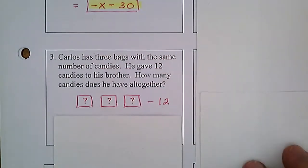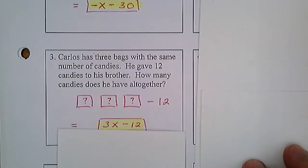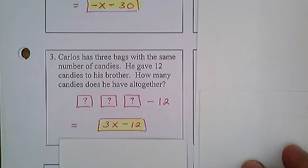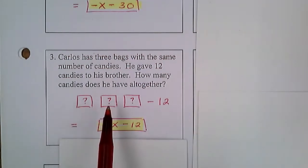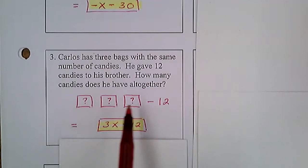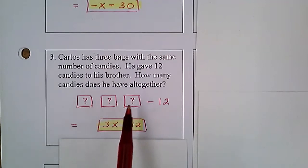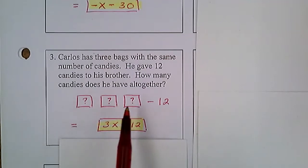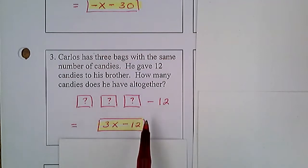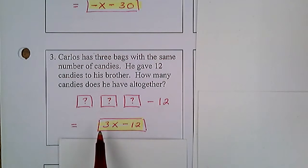Now we need to translate this to an algebraic expression. Since each bag's amount is unknown, we write 3x minus 12. Each bag is an x — so 1, 2, 3 — that's 3x. And minus 12 because he's giving 12 pieces of candy away. So the expression is 3x minus 12.